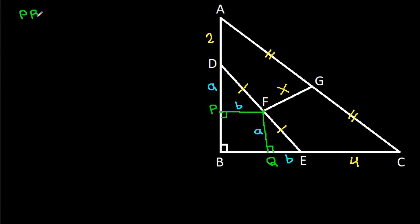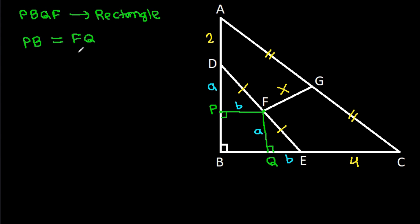Now PBQF will be a rectangle. So PB will be congruent to FQ, and PF will be congruent to BQ. So PB will also be A, and BQ will be B.